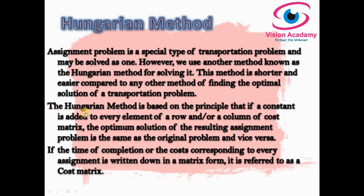In the Hungarian method, we take a problem and apply treatments: row reduction, column reduction, rounding up of zeros, striking out zeros, and more. The principle in the Hungarian method is that if a constant is added to every element of a row or column of the cost matrix, the optimum solution of the resulting assignment problem is the same as the original problem. We apply some treatment to find the best allocation, and we get the result from the original problem.